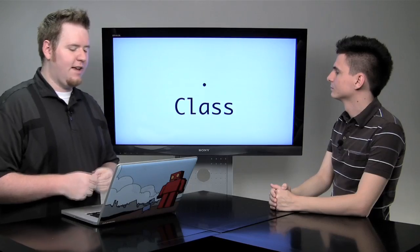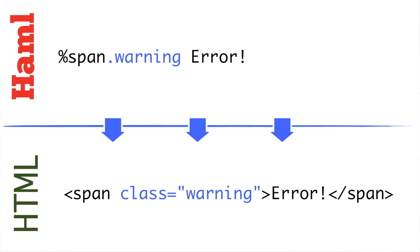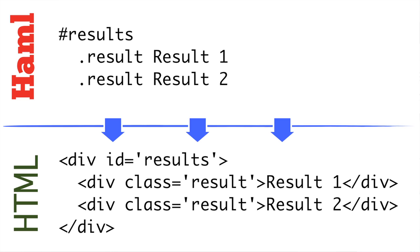Just like in CSS, the dot is used to represent class names of our tags. We can create a span with the class warning by doing %span.warning, and we can see the warning class is moved into the class attribute of our generated HTML tag. We can also add multiple classes by using multiple dots — so using .highlight.danger on the em tag will generate both a highlight and a danger class separated by spaces. And just like with IDs, if there's no %tag defined, it defaults to being a div.